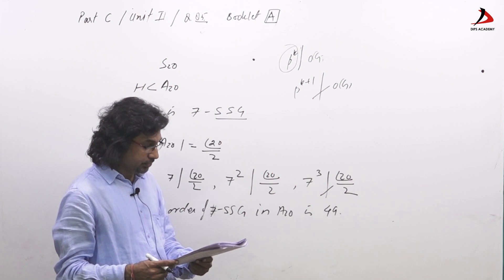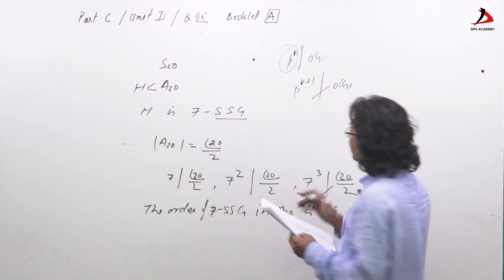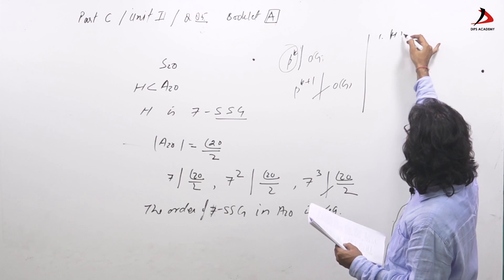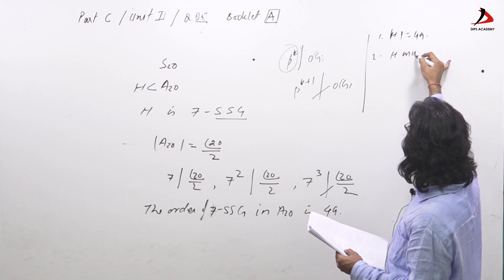Now, so this gives you the first option correct - option 1 is correct. The options are: 1. order of H is 49; 2. H must be cyclic.